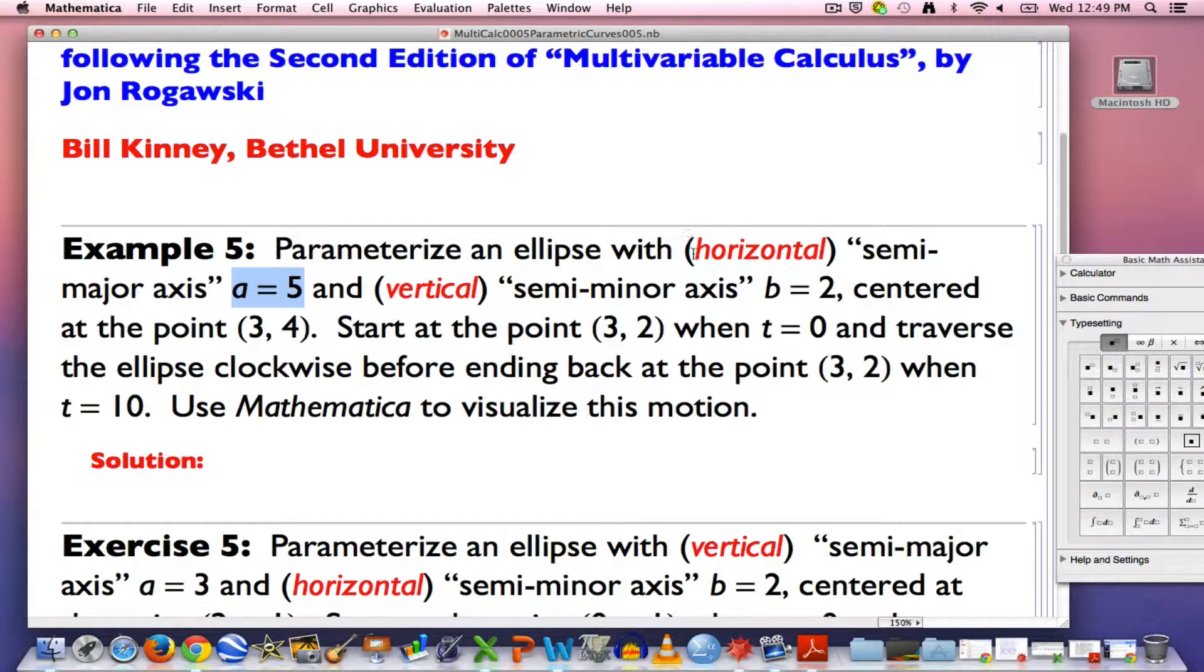And the semi-minor axis is a number, in this case b equals two, that represents the distance between the center of the ellipse and the vertices that are closer. That will be a vertical orientation in this example, though notice in this exercise down here that you should do afterwards that I switched around the role of vertical and horizontal.